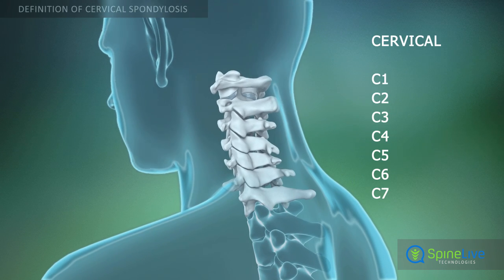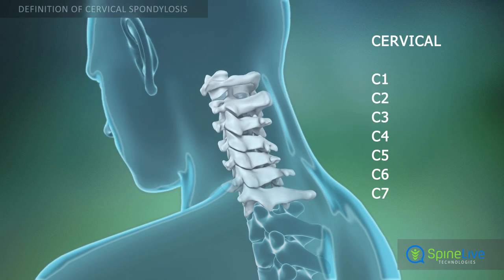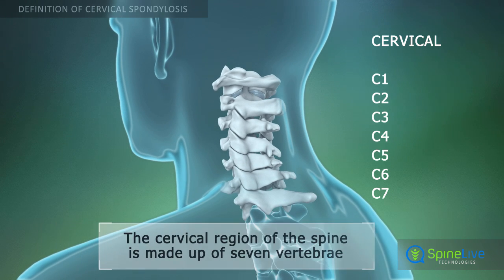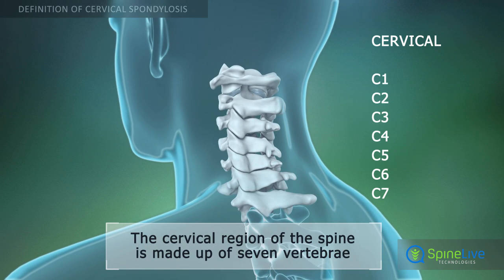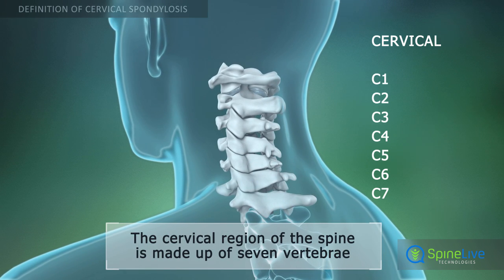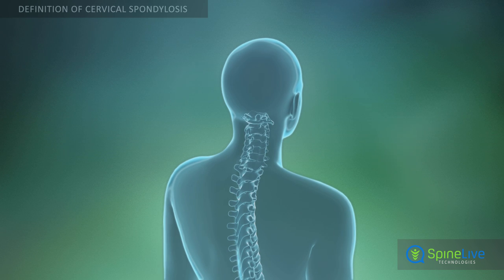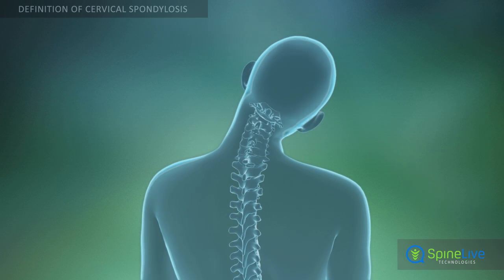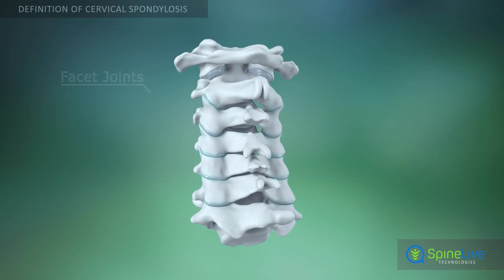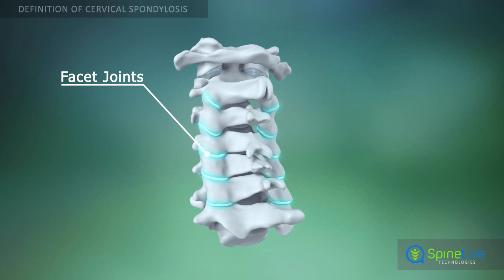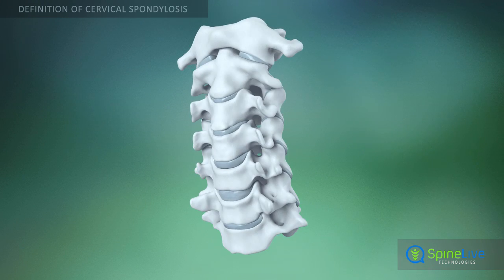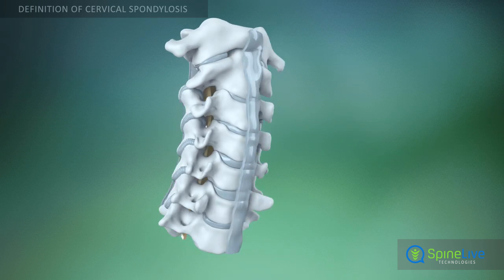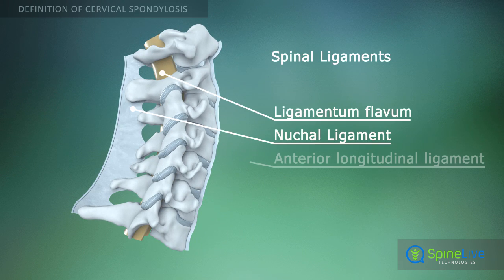The cervical region of the spine is made up of seven vertebrae, which are designated as C1 through C7. The cervical region of the spine is very mobile. The mobility of the neck is ensured by the facet joints, the intervertebral discs, and the spinal ligaments.